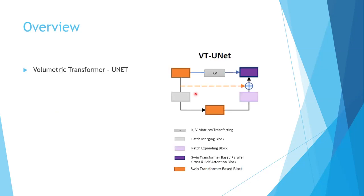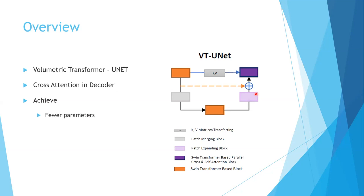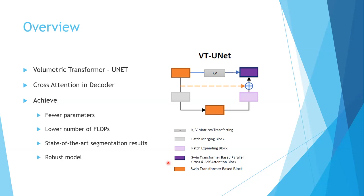We come to the proposed architecture of the paper: the Volumetric Transformer U-Net (VT-UNet). It is composed of 3D Swin transformers, and one of the main design choices is using cross-attention in the decoder, which I will discuss in more detail in subsequent slides. Using this model, the authors achieved a significantly lower number of parameters and floating-point operations compared to other models, surpassed state-of-the-art models in terms of Dice and Hausdorff distance metrics on the BraTS dataset, and the model is relatively more robust than its counterparts.